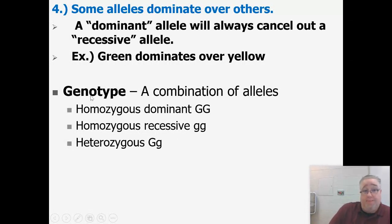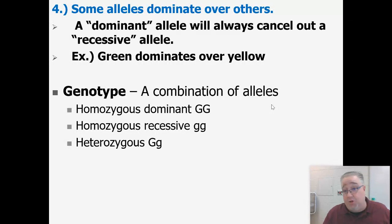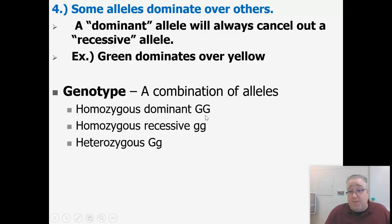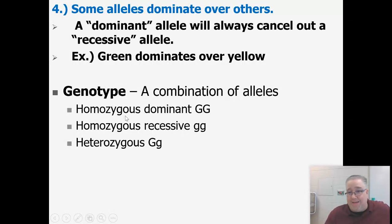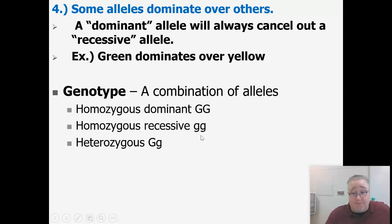A genotype is a combination of alleles. Every pea plant has two alleles, so there are three possible genotype combinations for pod color: big G big G (homozygous dominant — homozygous means the same, so two dominant alleles), little g little g (homozygous recessive — two recessive alleles), or big G little g (heterozygous — heterozygous means different, so one of each). Remember that.